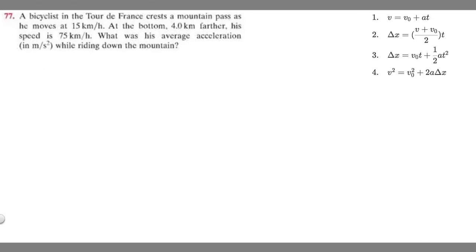In this problem, we're told a bicyclist in the Tour de France crests a mountain pass as he moves at 15 kilometers per hour. At the bottom, 4 kilometers farther, his speed is 75 kilometers per hour. What was his average acceleration in meters per second squared while riding down the mountain?